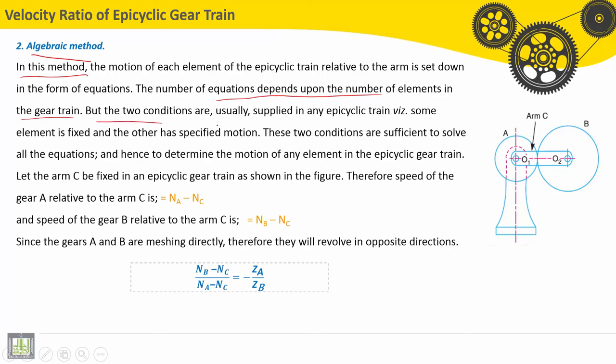But the two conditions are usually supplied in any epicyclic train: some element is fixed and the other has specified motion. These two conditions are sufficient to solve all the equations and hence to determine the motion of any element in the epicyclic gear train.